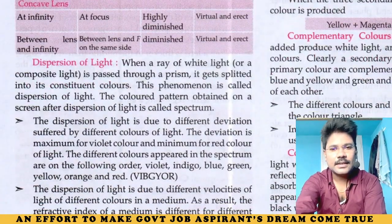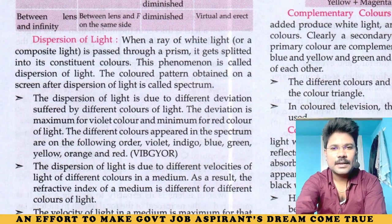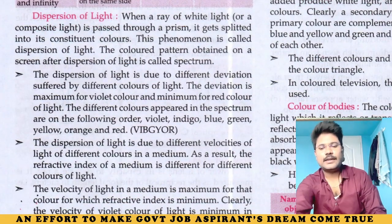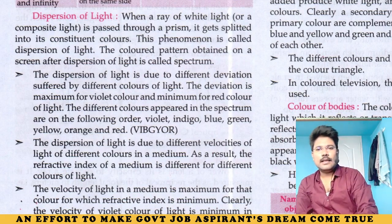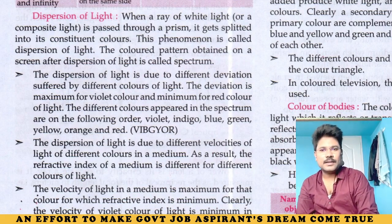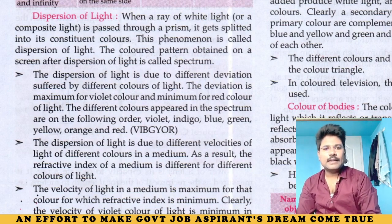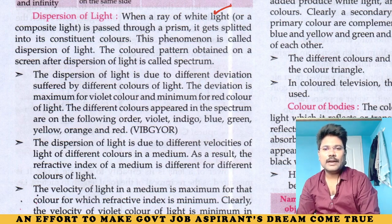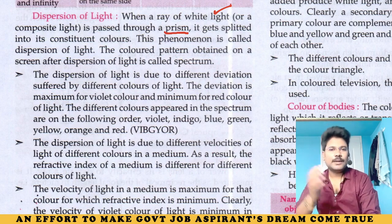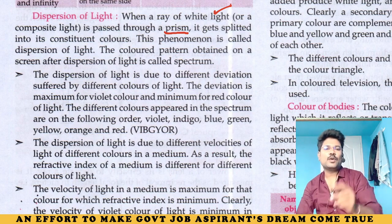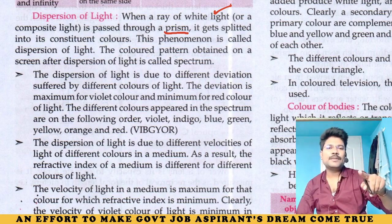We shall start with dispersion of light. What is dispersion of light? Okay, dispersion of light. What is the dispersion of light? That means, when a ray of white light — okay, white light — one ray passes through a prism. It gets split into its constituent colors.